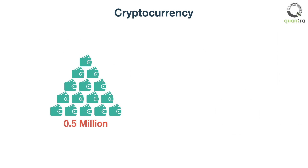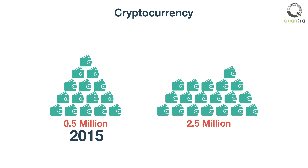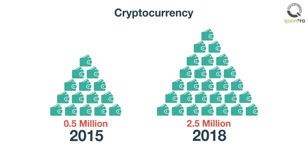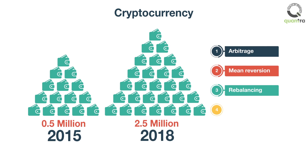The number of cryptocurrency wallets has exploded from under 500,000 in 2015 to over 2.5 million in 2018. This rapid rise in the popularity of cryptocurrencies has created many trading opportunities based on arbitrage, mean reversion, rebalancing, and momentum.